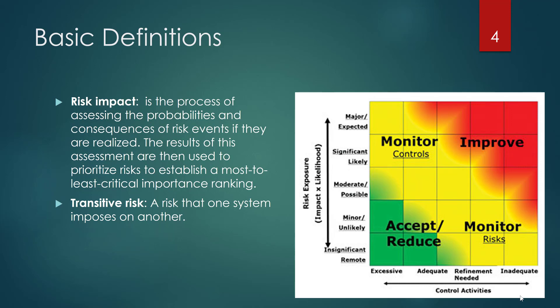Transitive risk is when you have a problem with one system and it actually transfers that risk onto another system. We saw that in the Target breach, where there was a problem with a third-party vendor and a point-of-sale device that ended up leading to a compromise of the core business systems and credit card numbers. Transitive risk is that risk one system imposes on another.